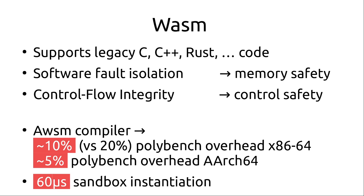WebAssembly is a relatively new technology, about three to four years old, for providing a software sandbox for legacy code. It supports C, C++, Rust, and other languages that all compile into this intermediate WebAssembly format that can then be compiled for our platform to provide a sandbox. It provides software fault isolation (SFI), which gives memory safety — a sandbox cannot access memory outside of its allowed memory ranges — and control flow integrity, meaning a sandbox cannot execute any code it was not compiled to execute. We implement our own compiler called Awesome, which shows about a 10% slowdown on Polybench on x86-64 over native C, versus a 20% slowdown for existing compilers like Wasmtime. On AArch64 on the Raspberry Pi, it's actually even faster at about a 5% slowdown.